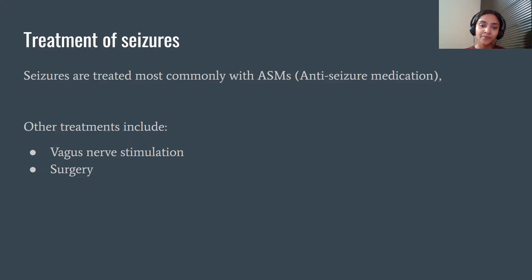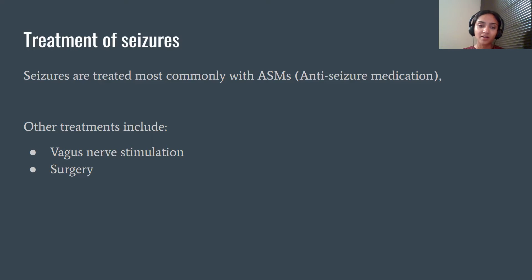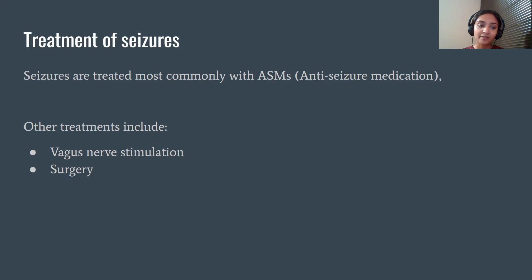Another treatment is surgery, which can be done to remove the part of the brain where seizures are occurring, or to stop the spread of the unwanted electrical currents. This could be an option if your seizures are hard to control and always start in one part of the brain not involved in anything critical like speech, memory, or vision. Surgery for epilepsy is complex and is often done by a specialized team. You can actually be awake during the surgery, since the brain doesn't feel pain on its own, and being awake helps surgeons better check different areas during the procedure. This is not an option for everyone, but it is for those who suffer greatly from seizures in their day-to-day lives.